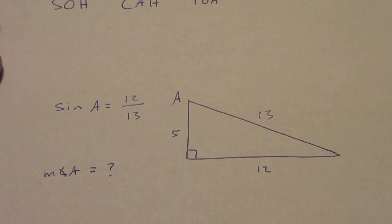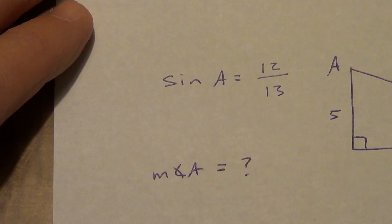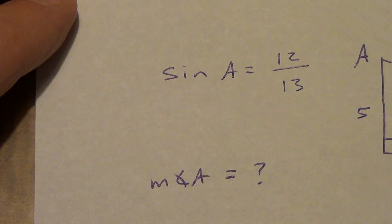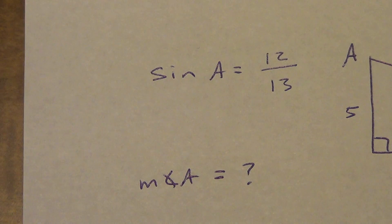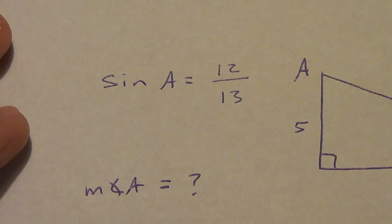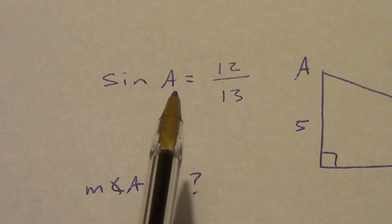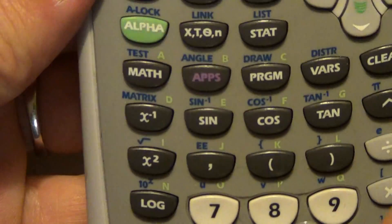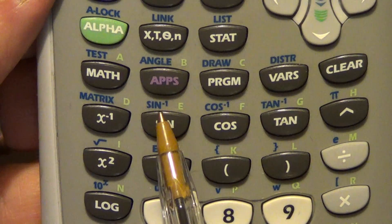The opposite is 12 and the hypotenuse is 13. Here's the big question: how do we find the actual measurement of angle A? We know what the sine of A is — it's the ratio 12 over 13. Keep in mind that sine, cosine, and tangent are just ratios. It would be nice if there was a way to figure out the exact measurement of that angle — and there is. It's on our calculator. Looking at the calculator, here are our sine, cosine, and tangent buttons, and right above them there's sine with a little negative 1, cosine with a negative 1, and tangent with a negative 1.